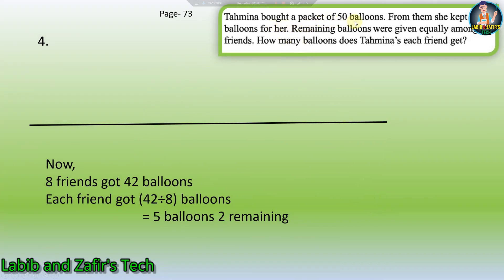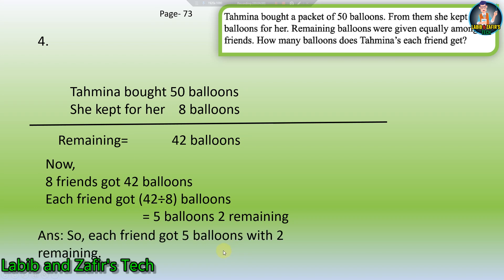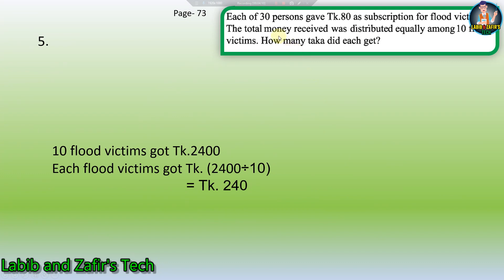The fourth word problem: Tahmina bought a packet of 50 balloons. She kept 8 balloons for herself. The remaining balloons were given equally among 8 friends. How many balloons does each friend get? Tahmina bought 50, kept 8, so 42 balloons remain. 42 ÷ 8 = 5 with remainder 2. Each friend gets 5 balloons with 2 remaining.